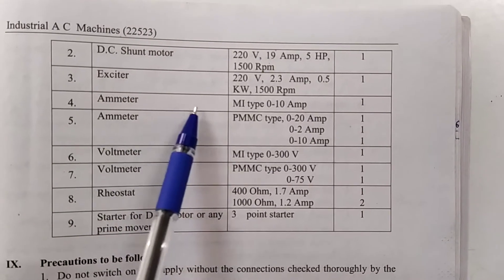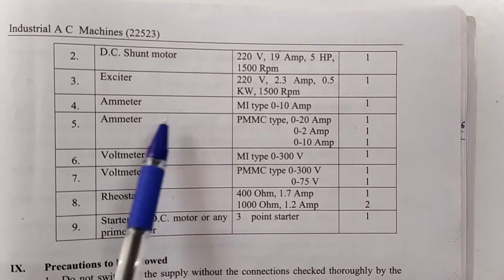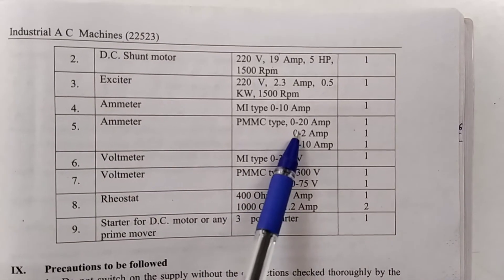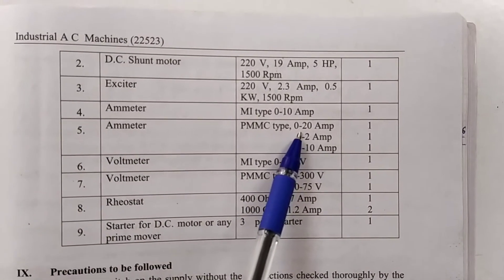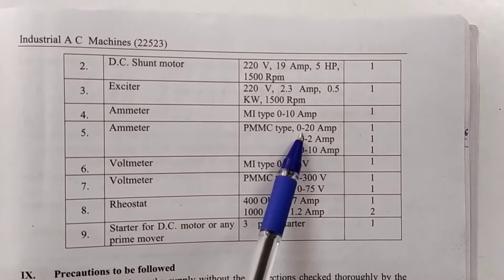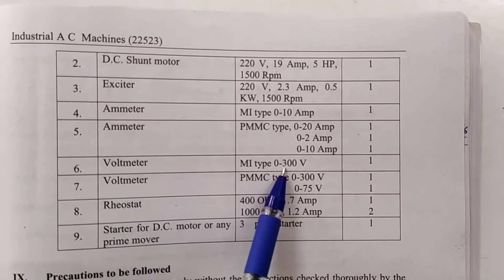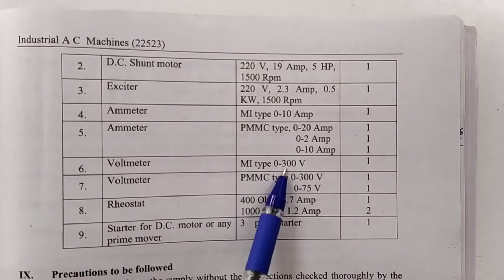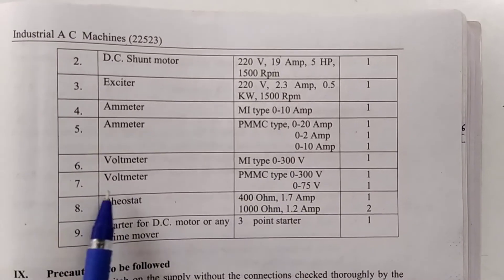An ammeter, MI type, is used to measure current; PMMC type, range 0 to 20A, is connected to the output of the alternator. A voltmeter, MI type, range 0 to 300 volts, is connected to the rated supply voltage from the DC motor side.